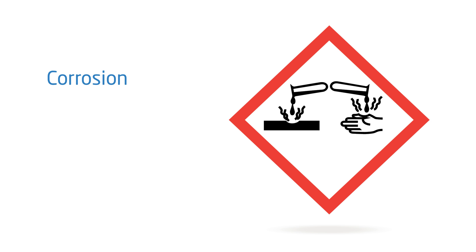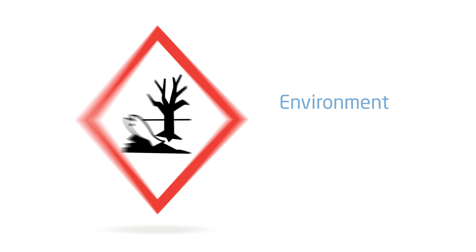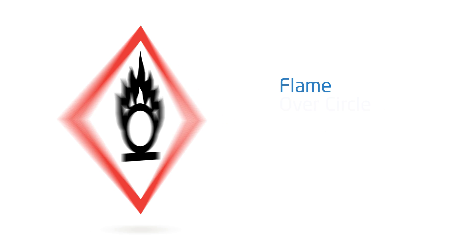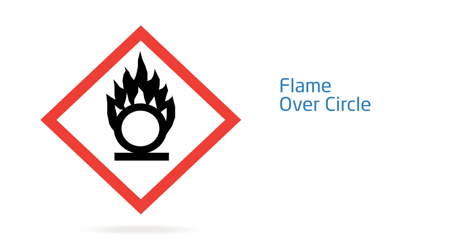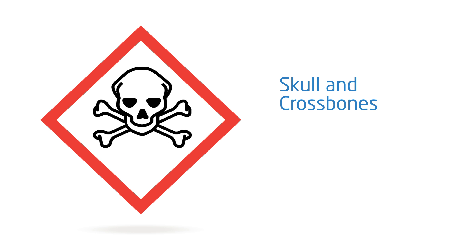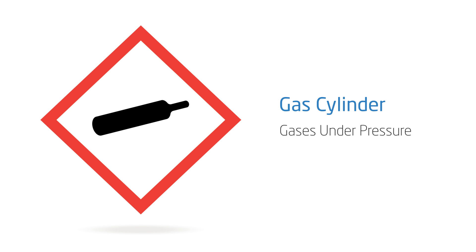The corrosion pictogram indicates skin corrosion, burns, eye damage, and corrosive to metals. The environment pictogram signifies aquatic toxicity. The flame over circle indicates the potential for oxidizers. The skull and crossbones pictogram signifies acute toxicity, fatal or toxic. The gas cylinder pictogram signifies gases under pressure.